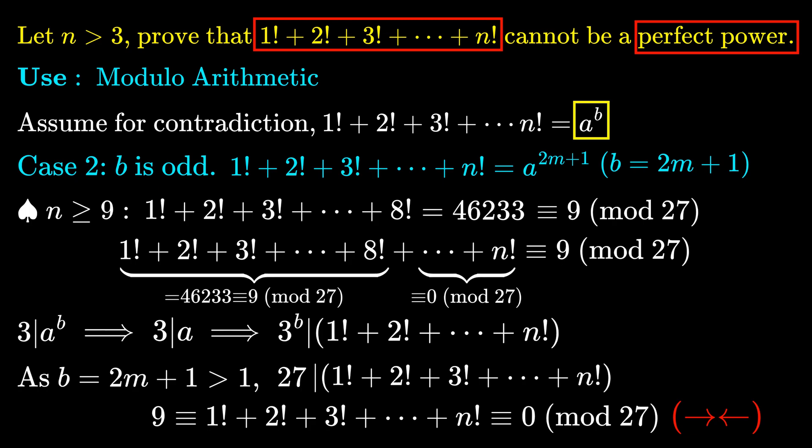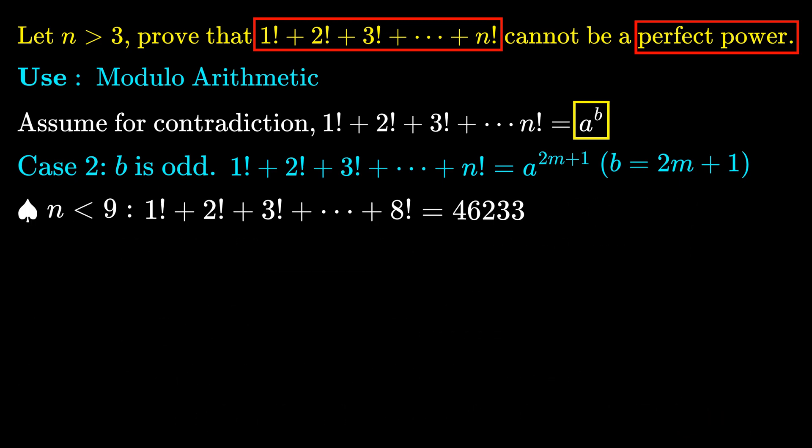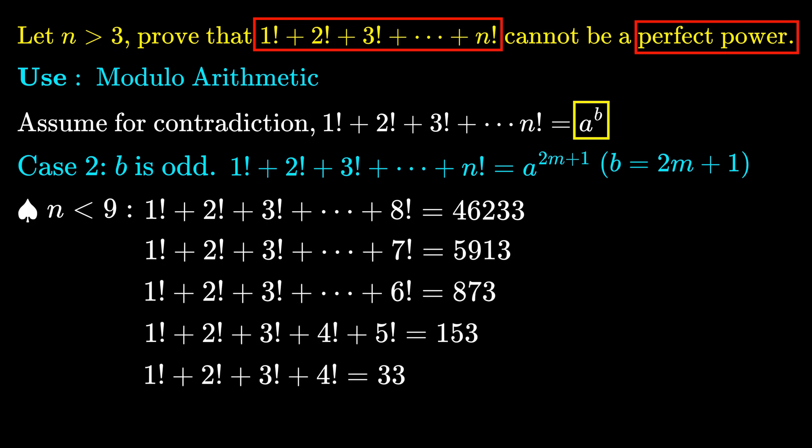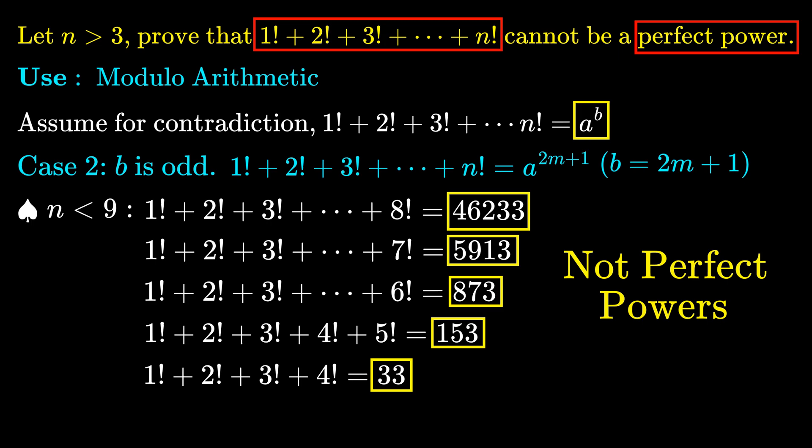So when n ≥ 9, the sum cannot be an odd power. For n < 9, we can manually check that the cases when n = 4, 5, 6, 7, or 8 will not give a perfect power, which I will leave you to verify on your own.